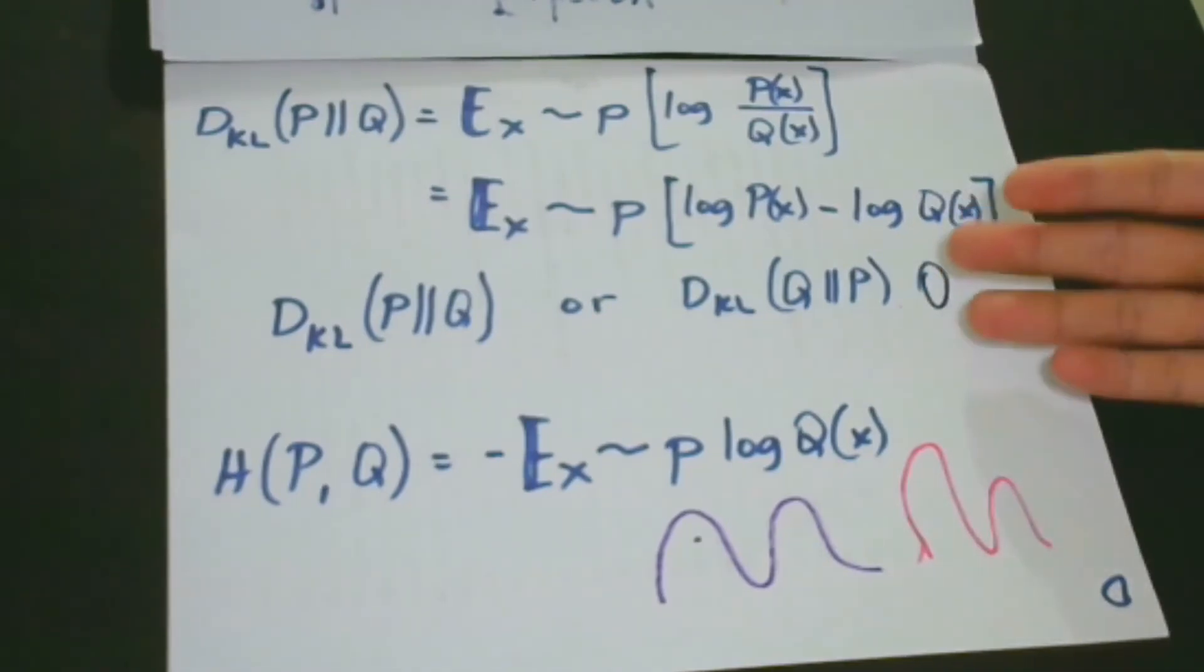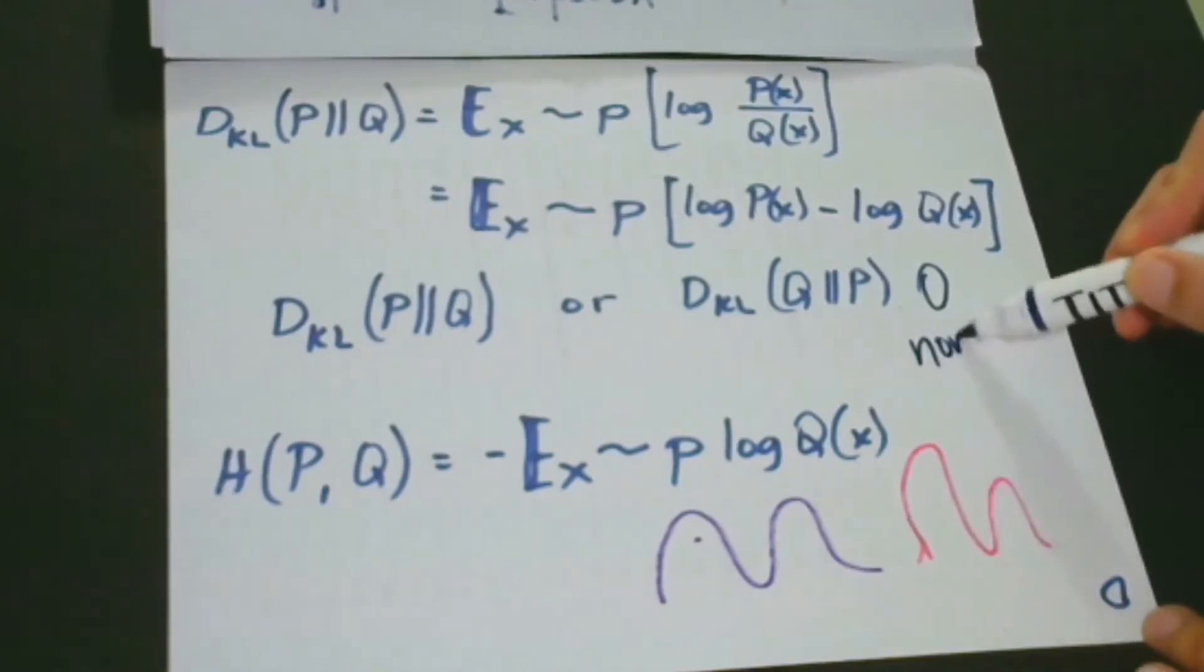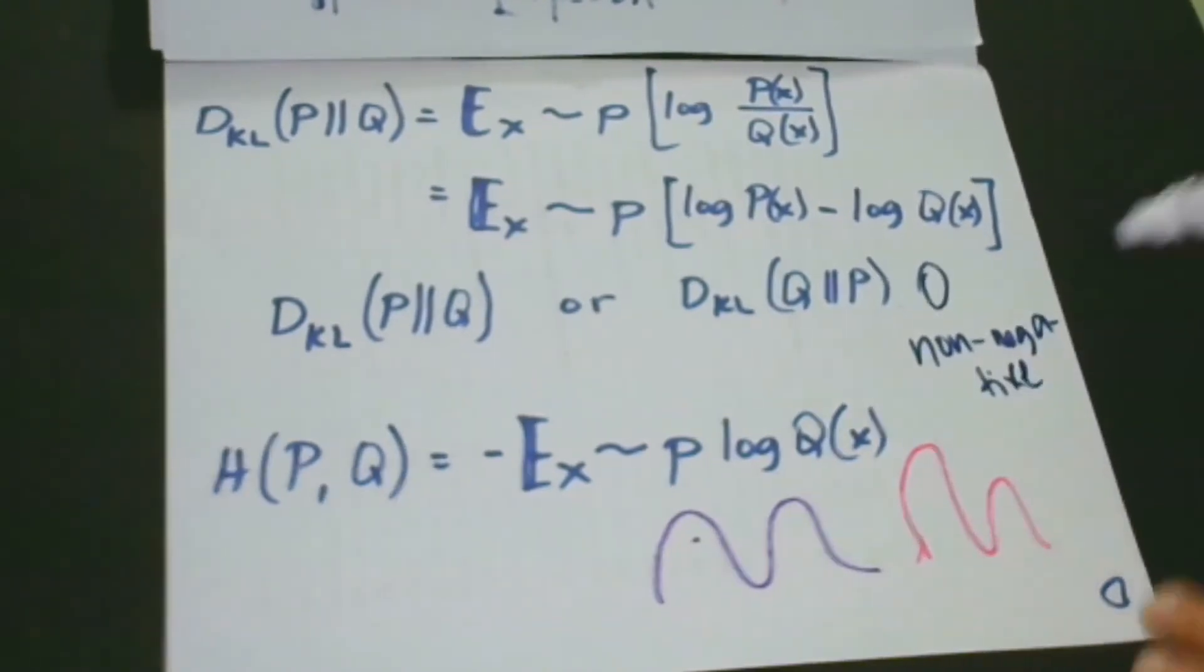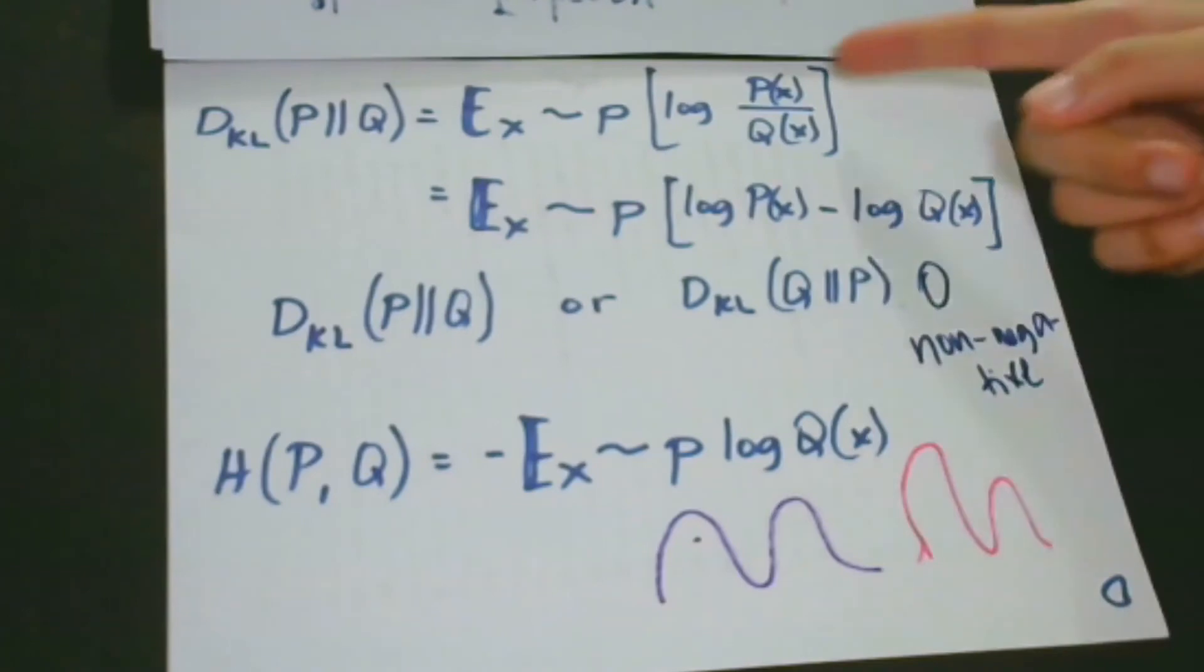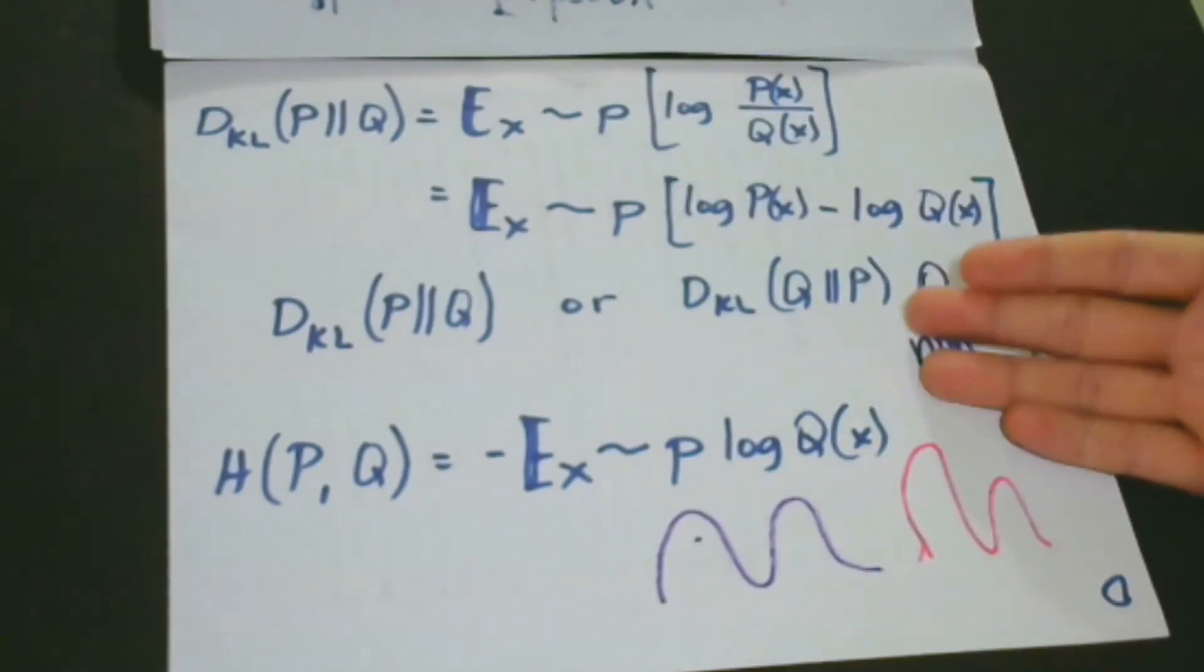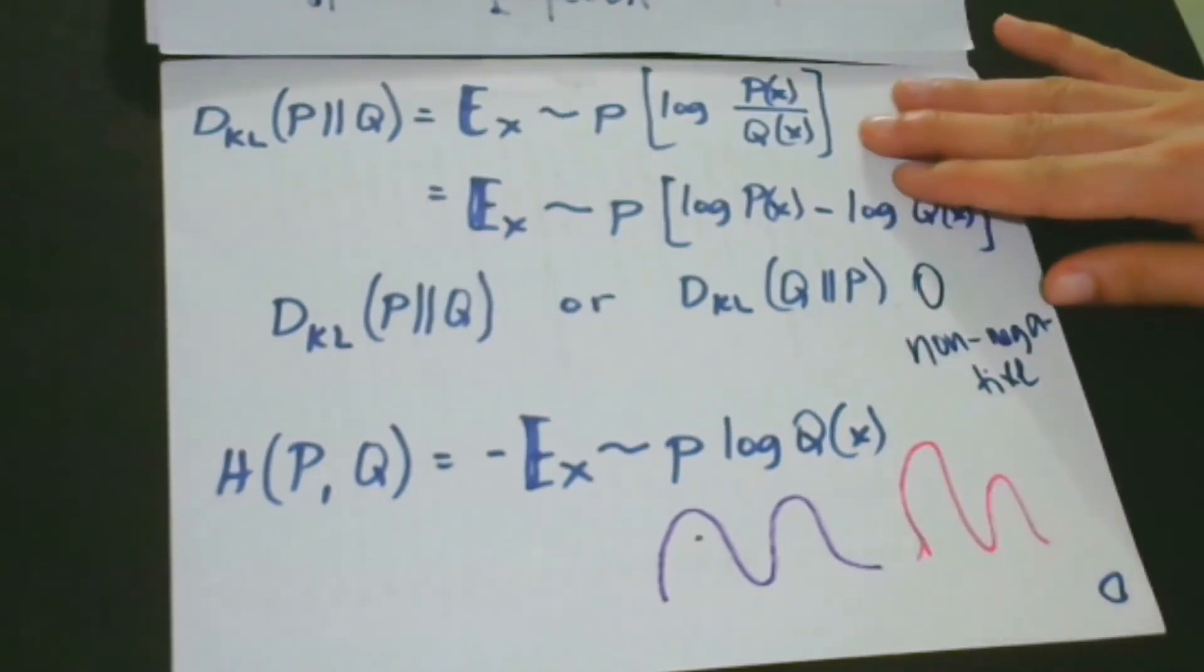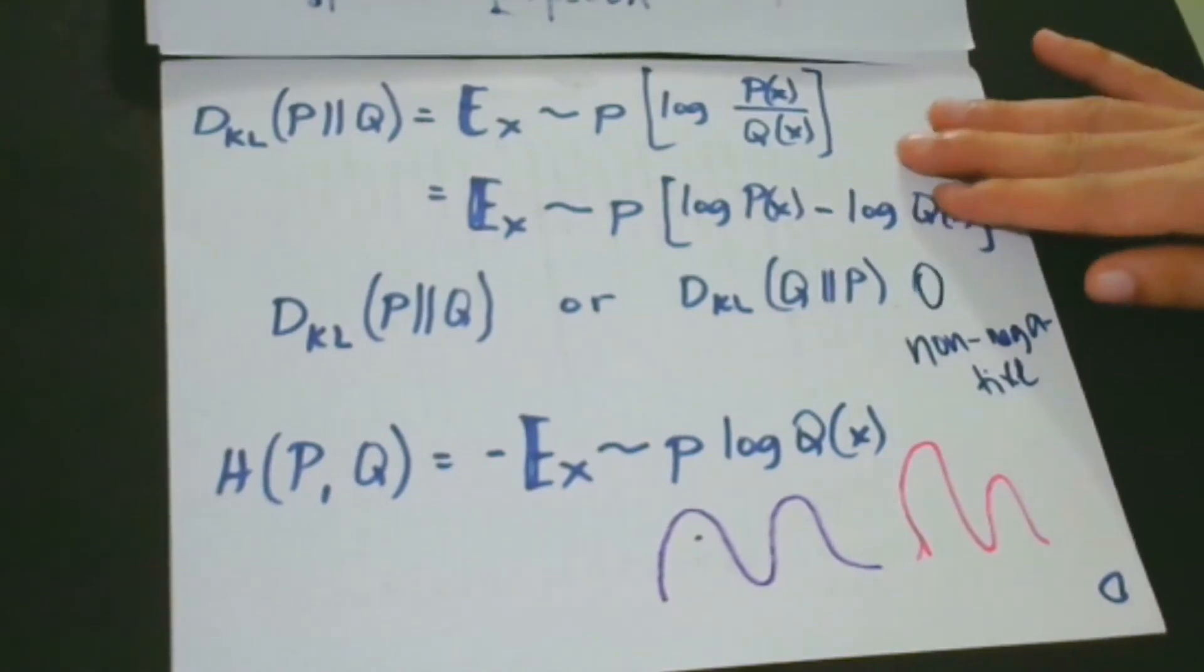KL divergence is zero if and only if P and Q belong to the same distribution. So this is the case of discrete variables. So in the case of continuous variables, it must be equal, almost everywhere. So KL divergence is non-negative. Let me write that. It is non-negative. And it measures the difference between two distributions, P and Q. So in our case, as what I've said, we have P and Q. So KL divergence seems to measure distance between distributions.